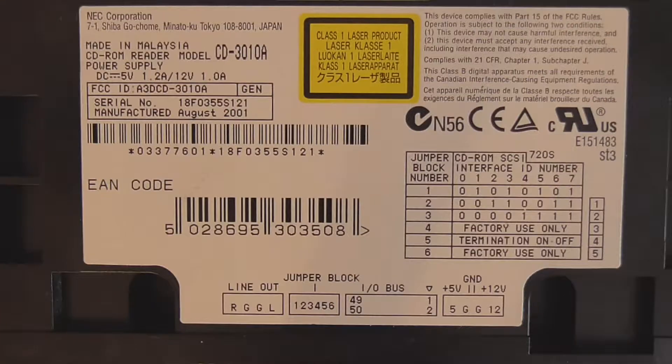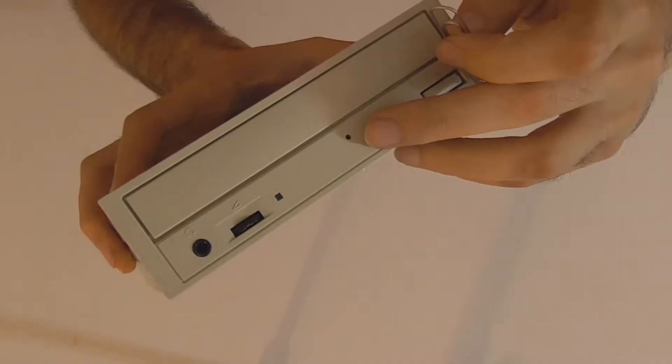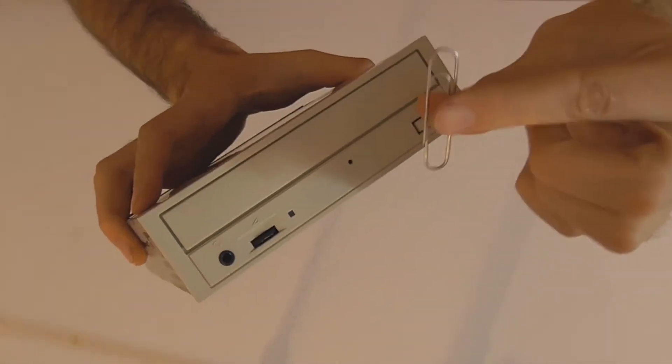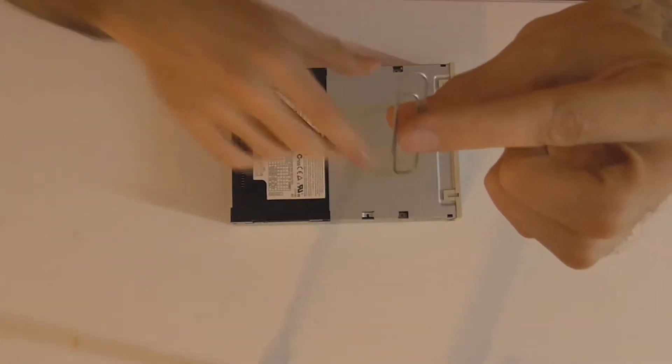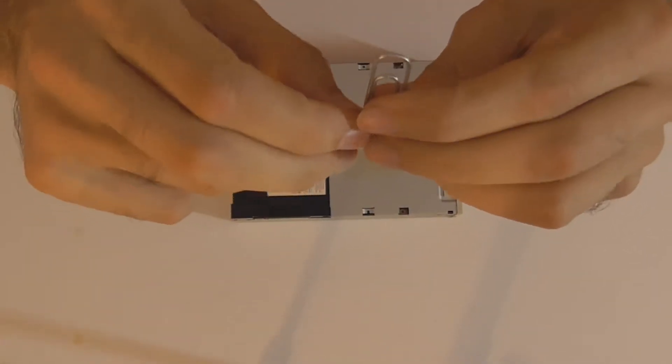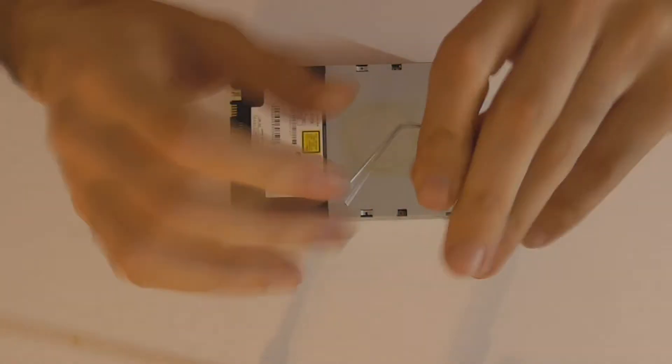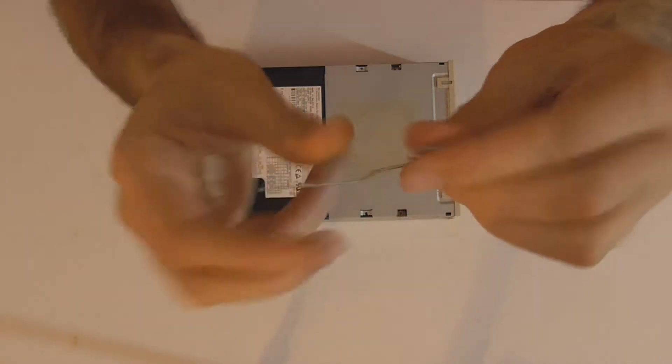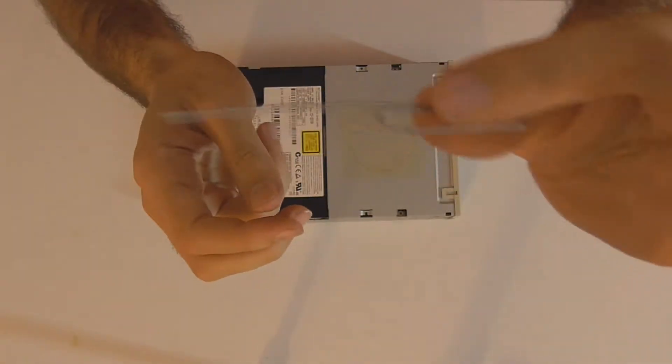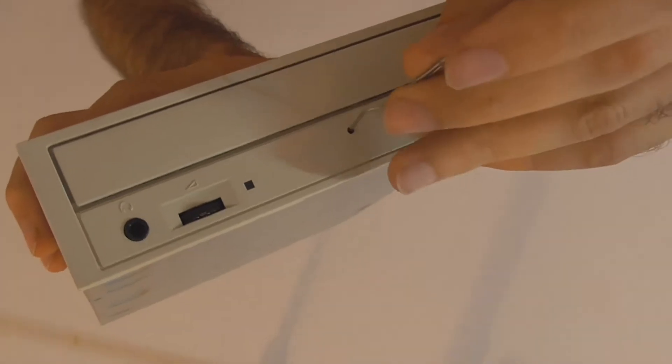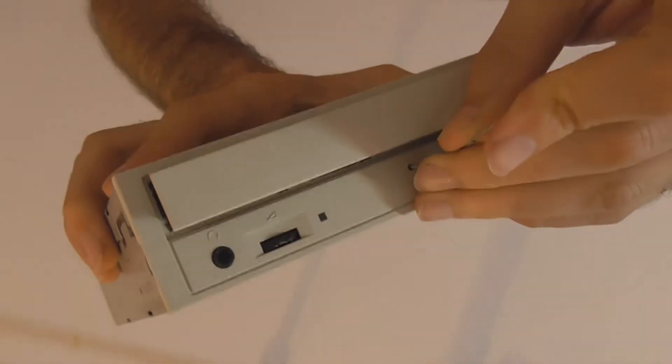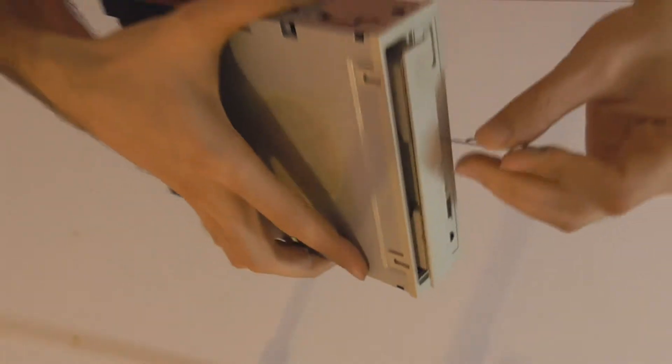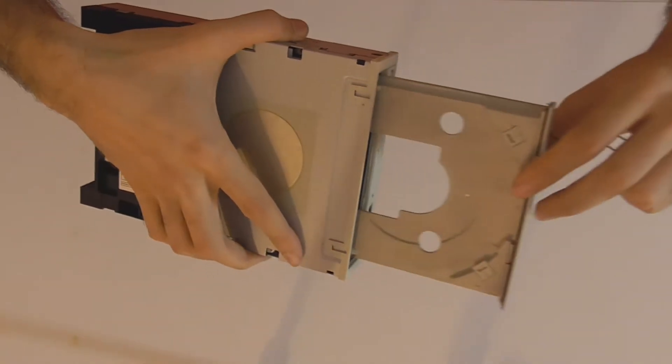This particular CD-ROM drive is an NEC Corporation model CD3010A. We'll begin this disassembly by taking the tray out, and for that we'll need something thin like a paper clip. Unfold the paper clip until you get a straight section at the end and push it into the hole located at the front of the CD-ROM drive. When you're pushing it in, try to hold it straight. You'll feel some resistance and keep going until the CD tray comes out a bit. Then you can grab it with your hand and pull it out all the way.